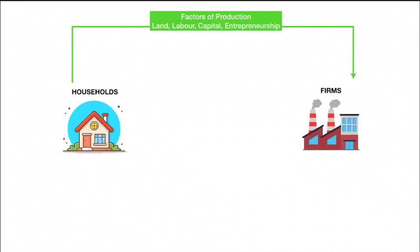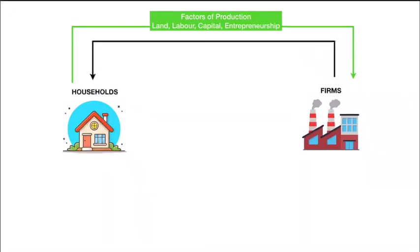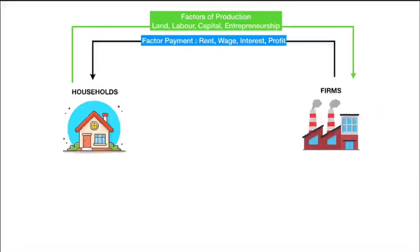Now, these factors of production are supplied by people like me and you, as we call factor of production. And in exchange, firms pay money. Rent is paid for land, wages are paid for labor, interest is paid for capital, and profit is paid for entrepreneurship. Or we can collectively call this factor payment.